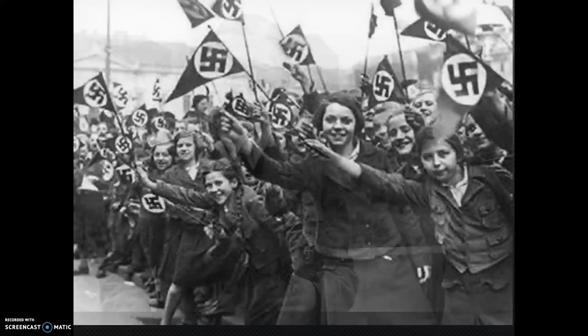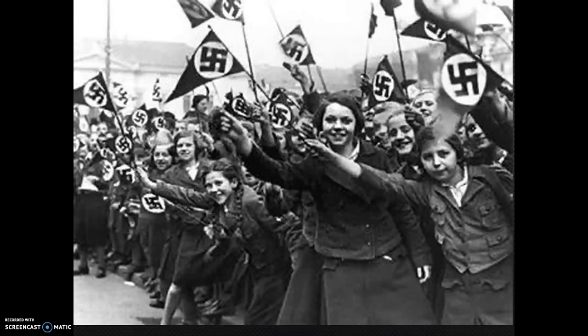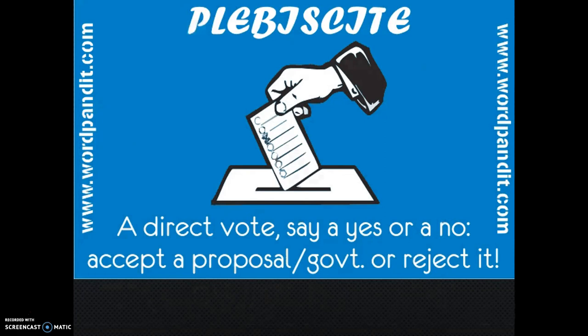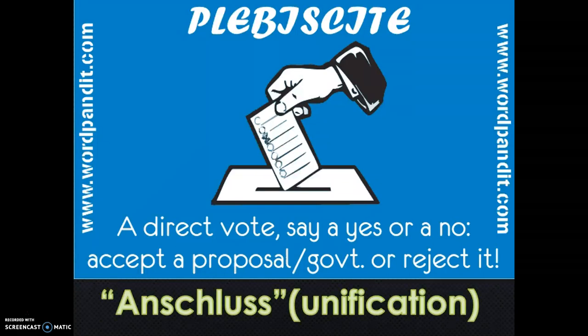The Austrian Chancellor reluctantly agreed to these demands in order to stave off a German invasion, but that wasn't enough for Hitler. Hitler began claiming in rhetoric that millions of Austrians wanted to unite with Germany and were being oppressed by the government of Austria. Austria's Chancellor decided he would hold a plebiscite to undermine Hitler's claim. On March 13th, voters were to be asked whether they wanted to join with Germany or not, known as the Anschluss.